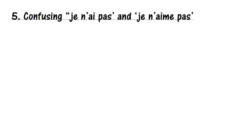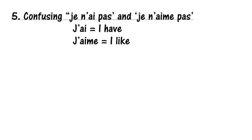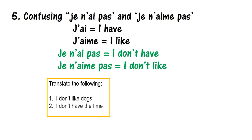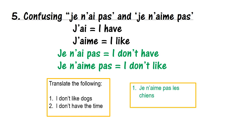Number five: confusing 'je n'ai pas' and 'je n'aime pas.' I see this all the time — they sound so similar. J'ai is 'I have' and j'aime is 'I like.' When they become negatives, applying the ne...pas sandwich: je n'ai pas is 'I don't have,' and je n'aime pas is 'I don't like.' Please pause and translate the two phrases. The answers: numéro un — 'Je n'aime pas les chiens.' Did you remember les? Numéro deux — 'Je n'ai pas le temps.'